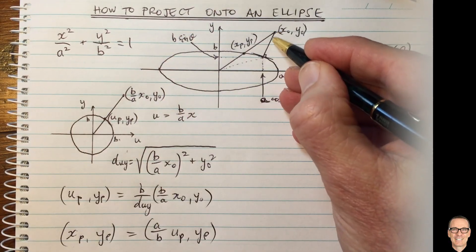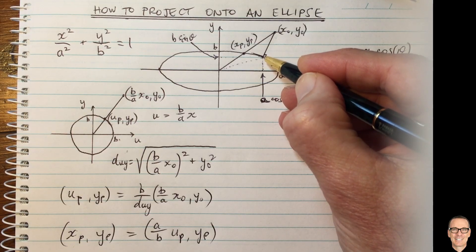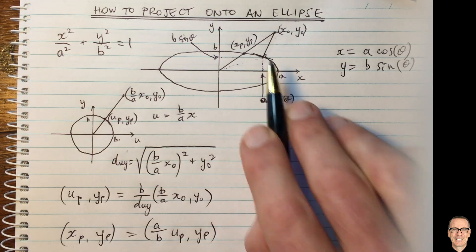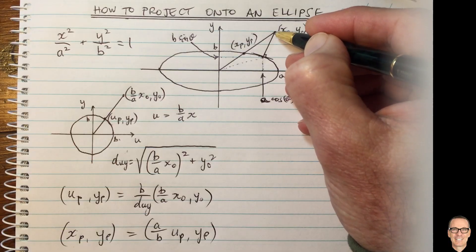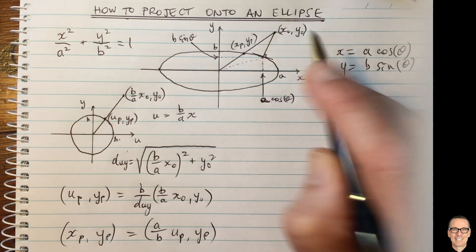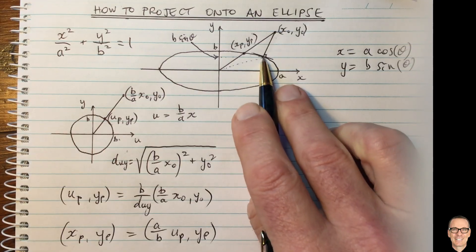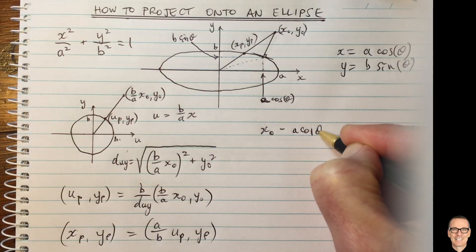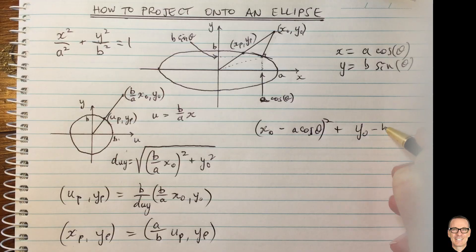And now what we can do is we can write an expression for the distance between our point and the ellipse, and then we're going to minimize that distance. So the distance is x naught minus the point on the ellipse, so x naught minus a cos theta squared, plus y naught minus b sine theta all squared.